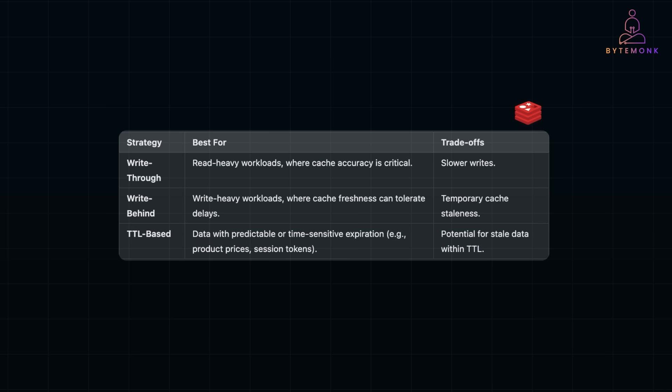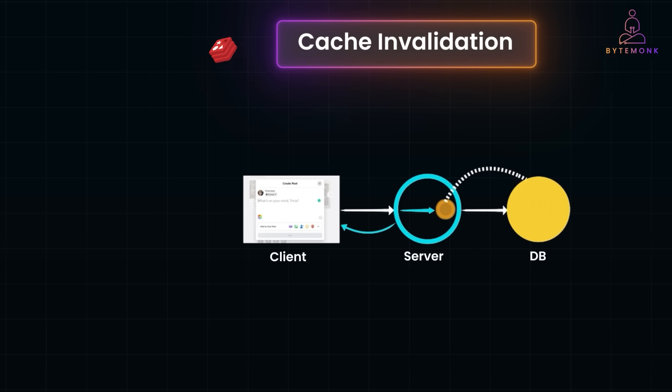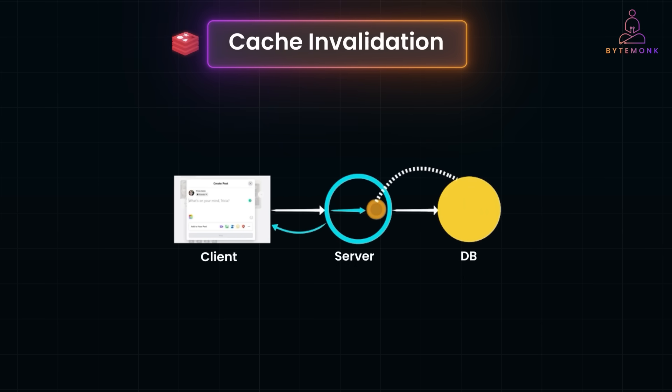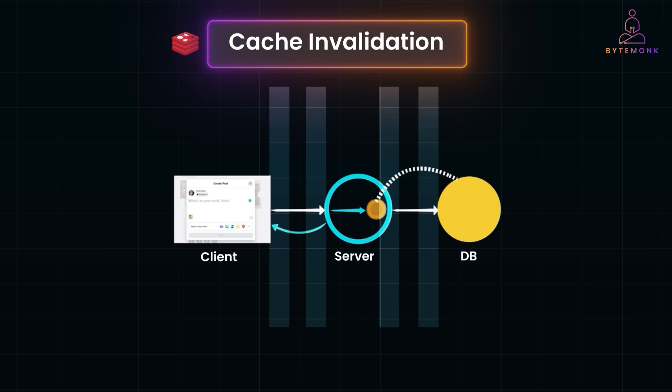Cache invalidation ensures that your cached data stays fresh and accurate, avoiding stale responses that frustrate users. By carefully choosing write-through, write-behind, or TTL-based eviction, you can balance performance and consistency to meet the needs of your application. Caching becomes truly powerful when implemented across multiple layers of the system, each designed to handle specific types of data closer to the user. This approach optimizes performance, minimizes server load, and delivers faster responses.